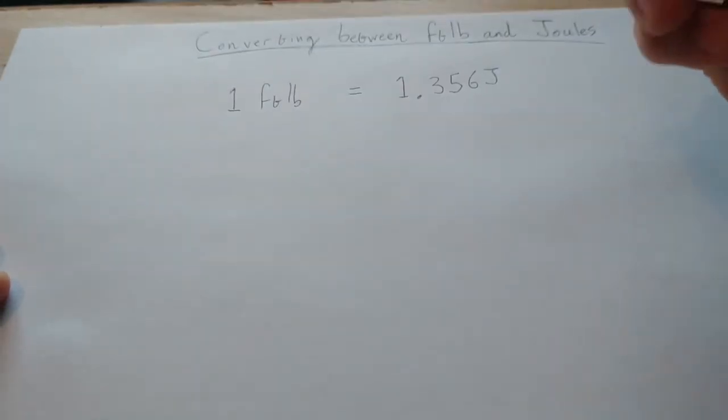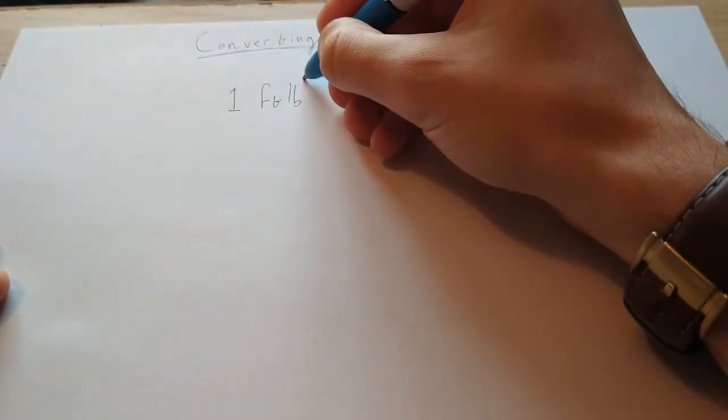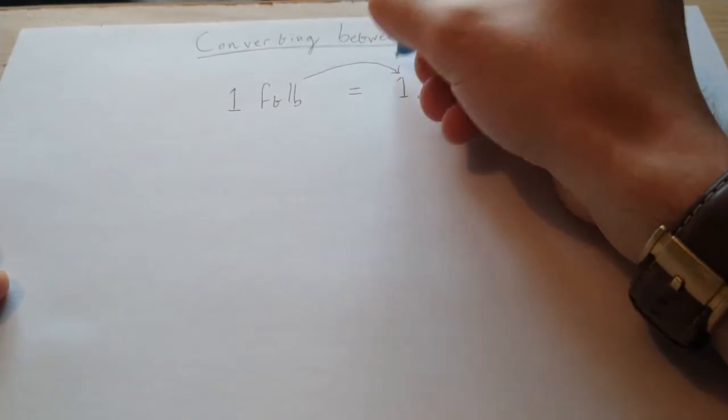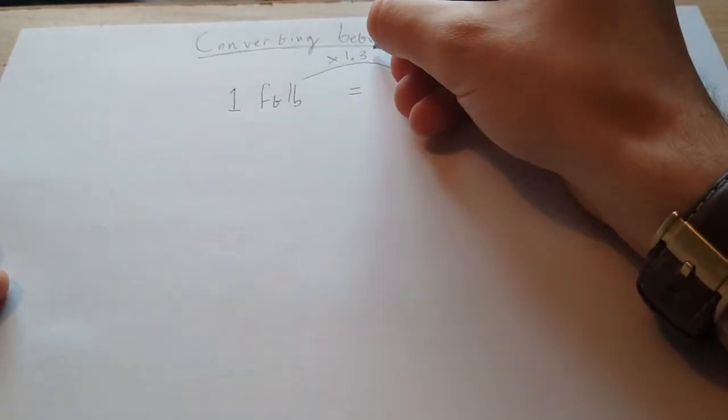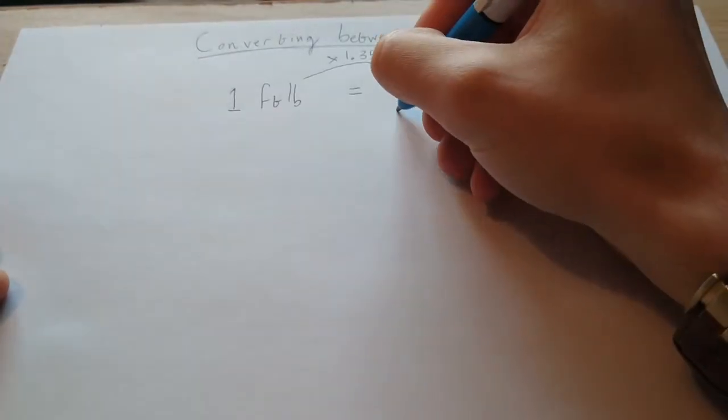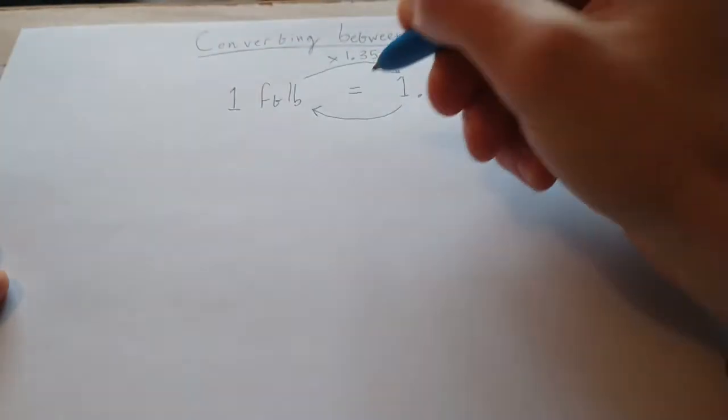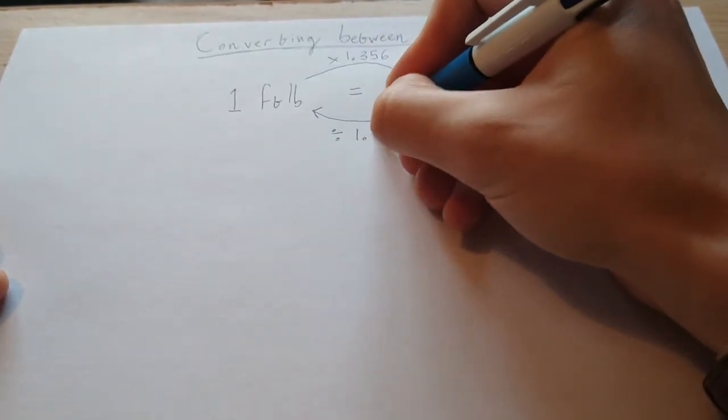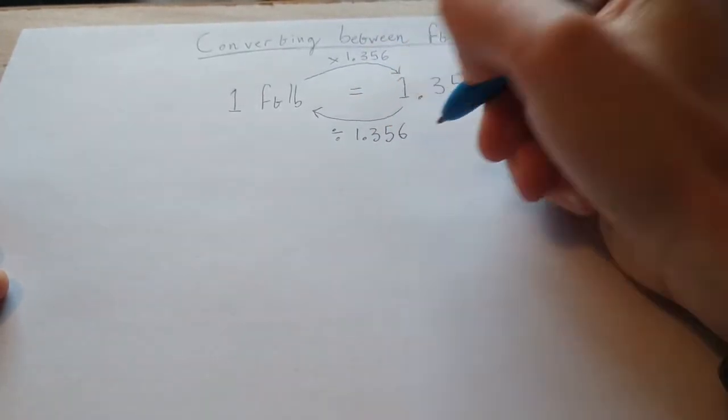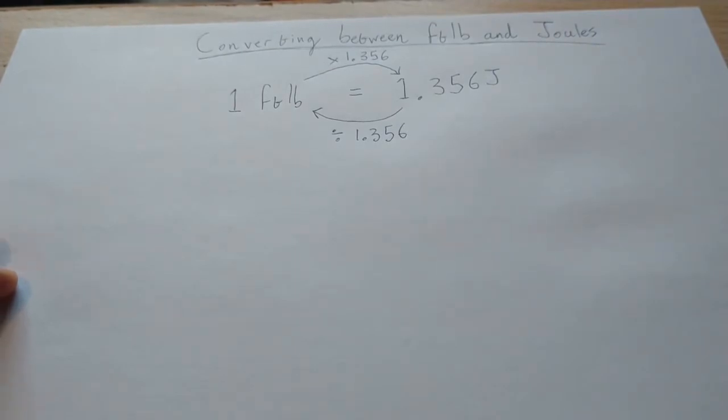So what this means is that to get from foot pounds to joules you need to multiply by 1.356, and to go back from joules to foot pounds you need to divide by 1.356. And that's the conversion.